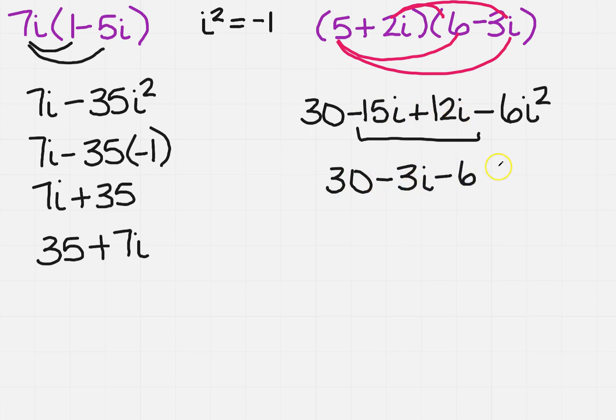But now remember, i squared is negative 1. So I'm going to get 30 minus 3i plus 6. 30 and 6 is 36, minus 3i, and that is in a plus bi form.